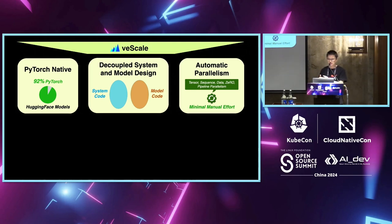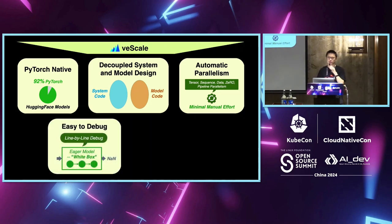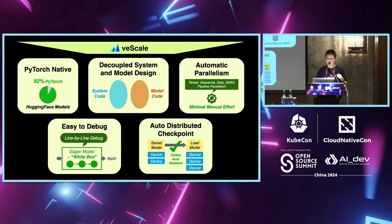The third feature is automatic parallelism — we minimize human effort when deciding the parallelization plan for TP, PP, and so on. V-Scale also supports eager execution so you can break into your lines of code and print out all the information you need to detect errors. And it supports automatic checkpointing, so you can easily save and load on different scales of cluster.